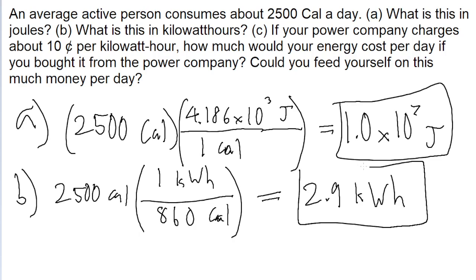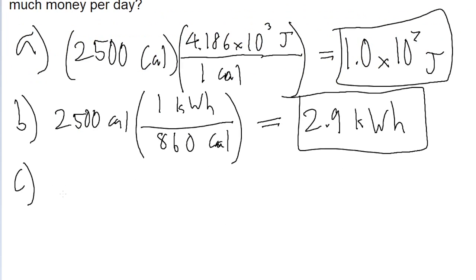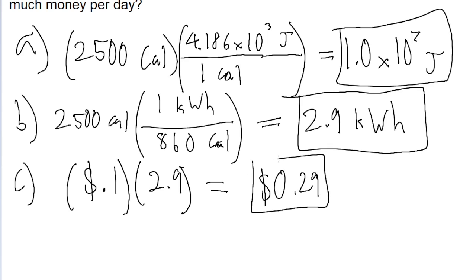So so far, this is just a bunch of unit conversions. Part C, the problem asks, how much our energy would cost each day if 1 kilowatt hour costs 10 cents. So that's 10 cents, or 0.1 dollars, multiplied by 2.9, the number of kilowatt hours we're consuming per day. And that is just 0.29 dollars, or 29 cents.